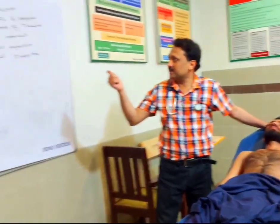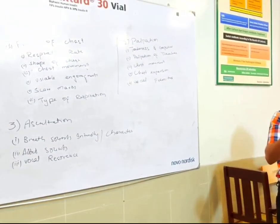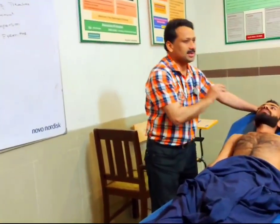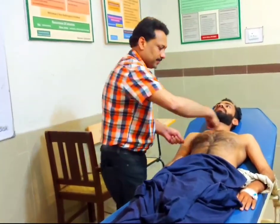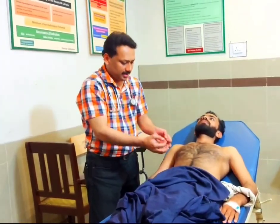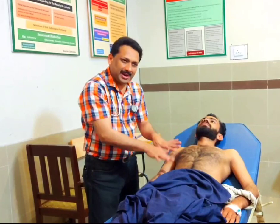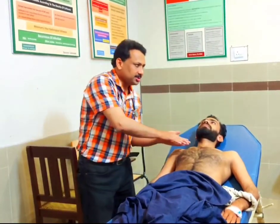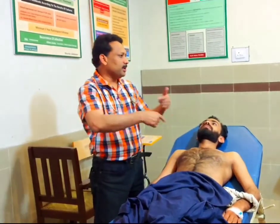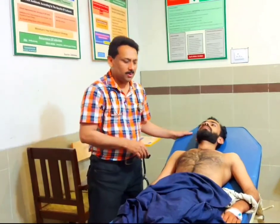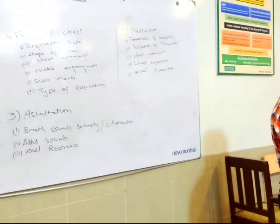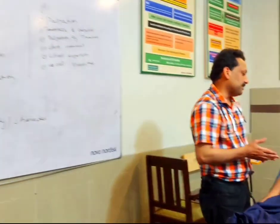Two things remain in the palpation part: chest expansion and vocal fremitus. Chest expansion should not be checked while the patient is lying down because the measuring tape will be compressed under the patient's weight. Chest expansion must always be checked with the patient in a sitting position — we will cover this when doing the examination of the back of the chest. The next step is checking vocal fremitus over all chest areas.